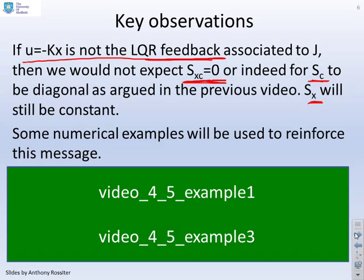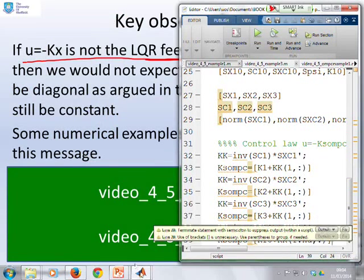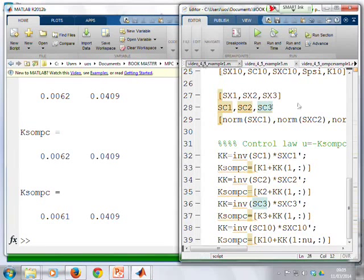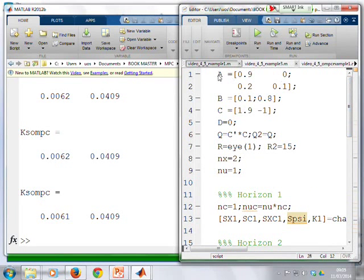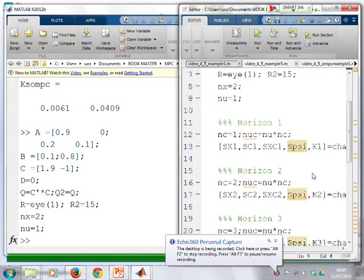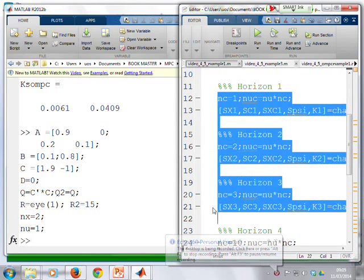So those are the examples, video four, five, example one, and example three. So we'll go to those now, and illustrate what's going on. First of all, let's take this example one. So what we'll do is we'll enter a system, there it is, and then we'll calculate these various cost functions for some different horizons.